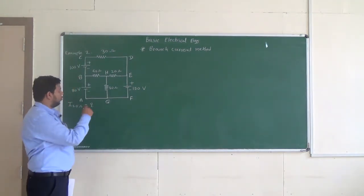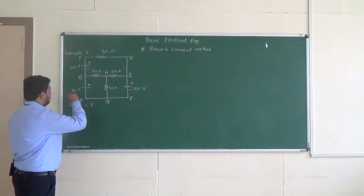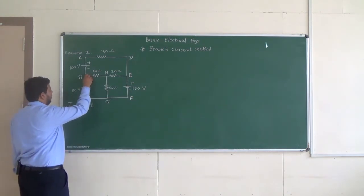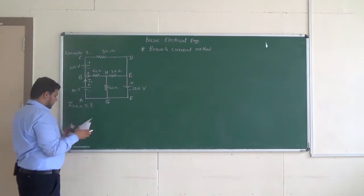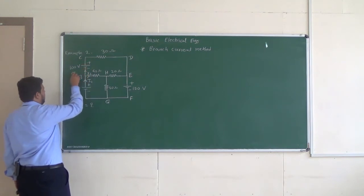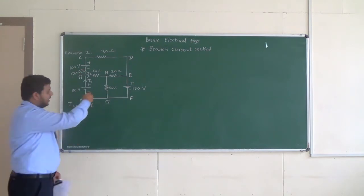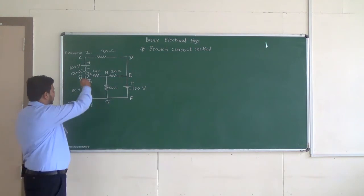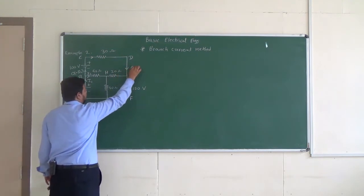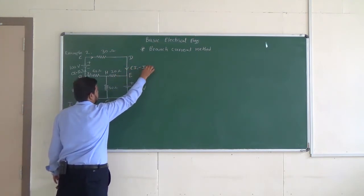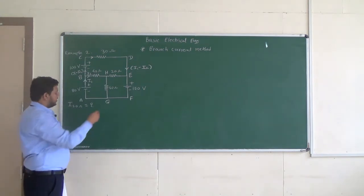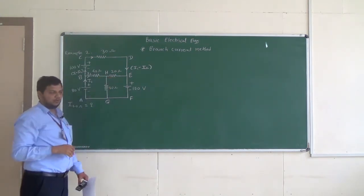In the third step we have to represent various currents and apply KCL. Let us say the current as I1. The current flowing through the 40 ohm is I2, and the remaining current by applying KCL will be I1 minus I2, because the incoming current is I1 and out of that I2 is flowing towards node H. So remaining current will be I1 minus I2, and the same current I1 minus I2 will flow through the 30 ohm up to this point.